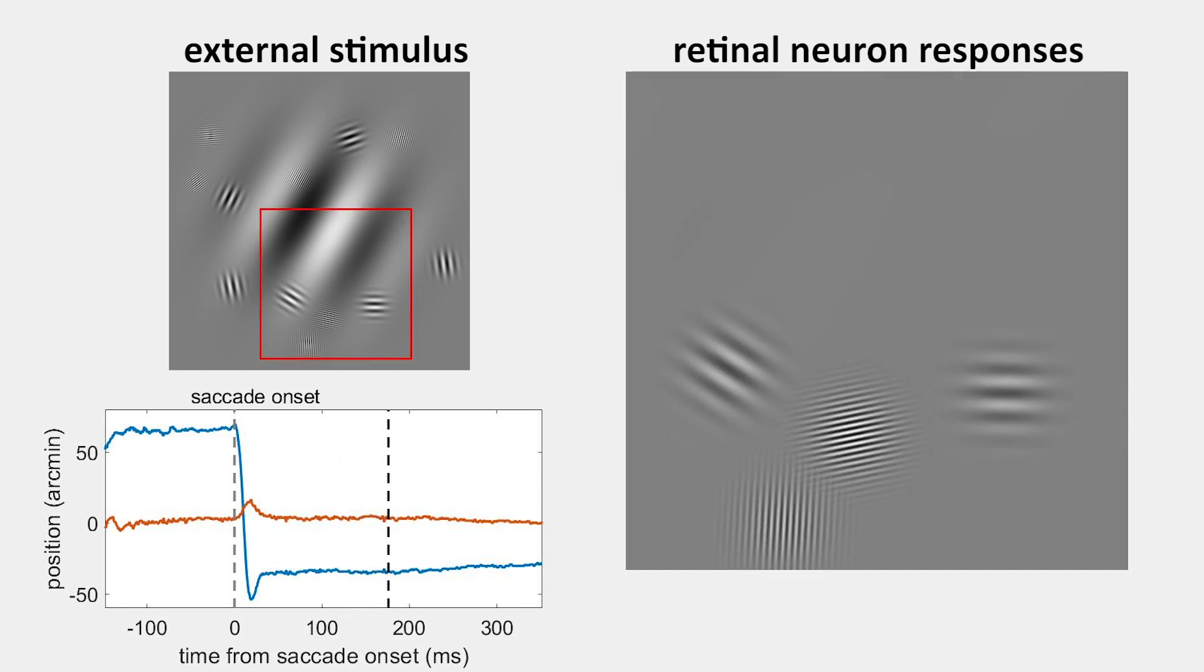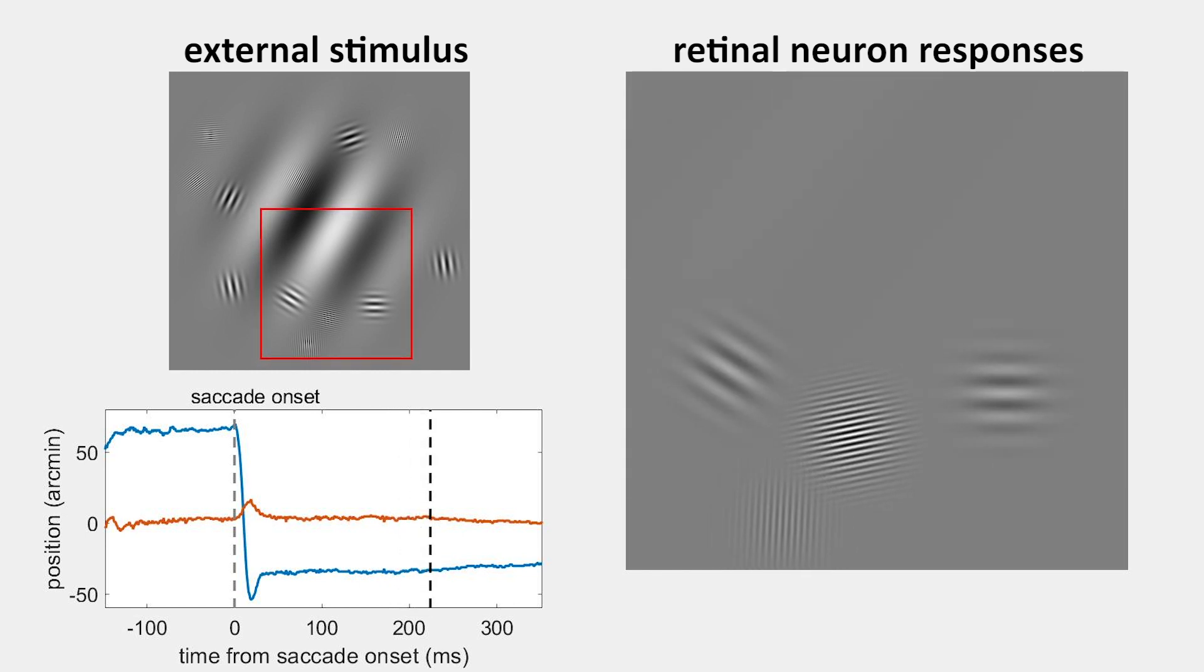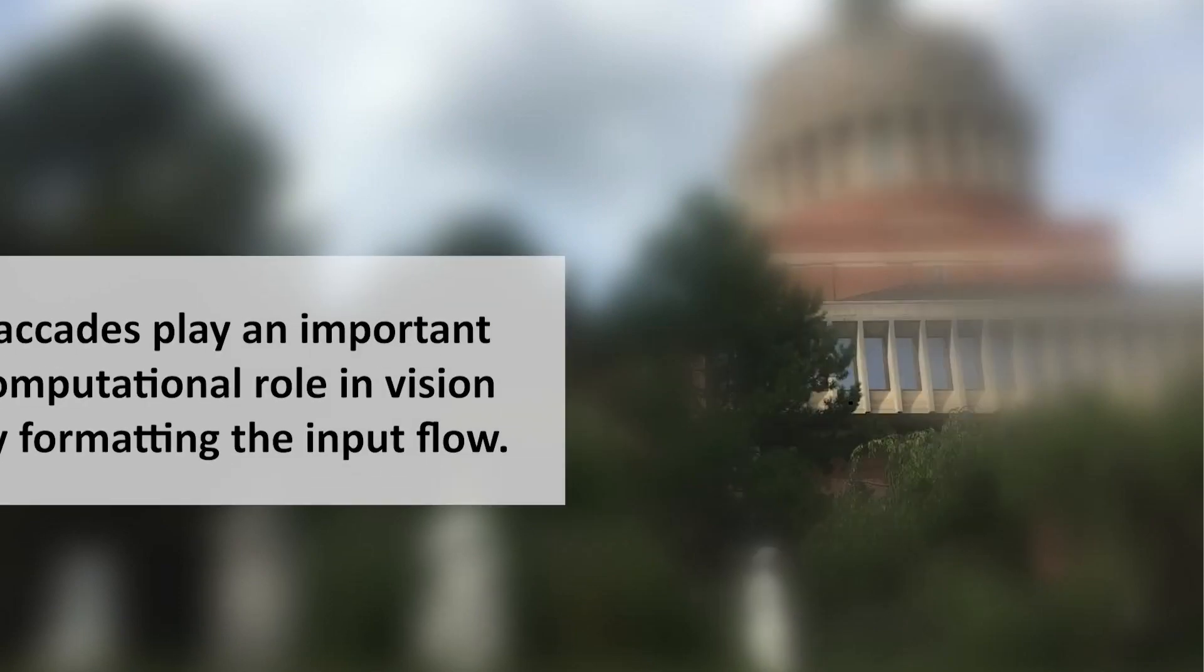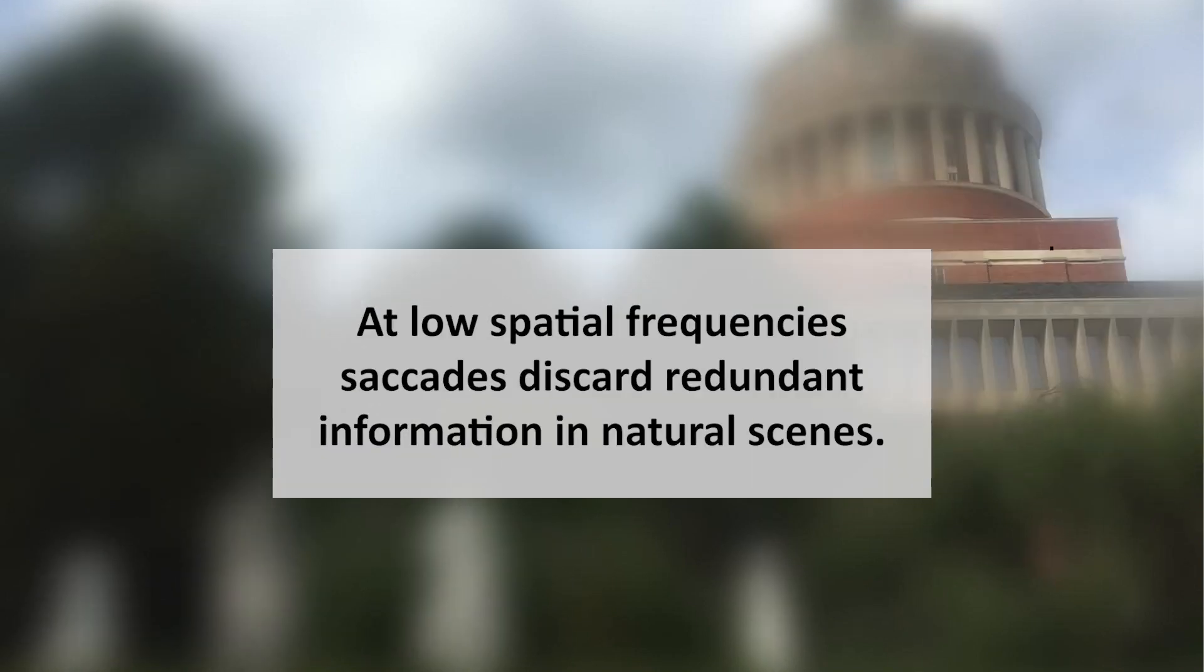Thus, the way we move our eyes contributes to the coarse-to-fine analysis of the visual scene. In summary, saccades play an important computational role in vision by formatting the input flow. At low spatial frequencies, saccades discard redundant information in natural scenes.